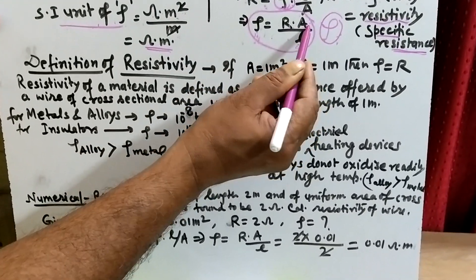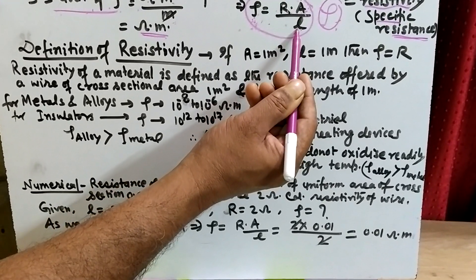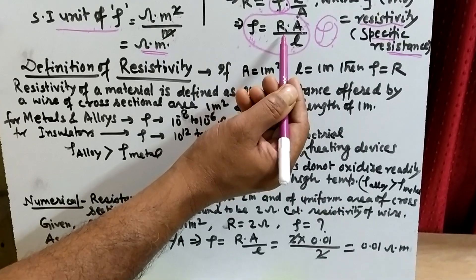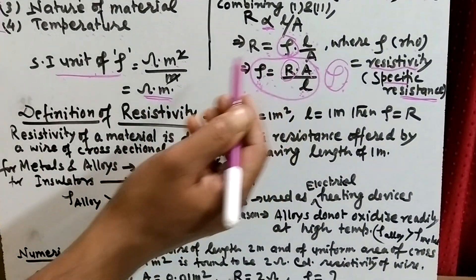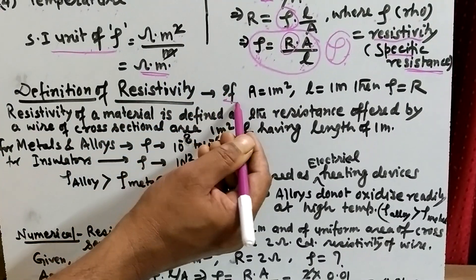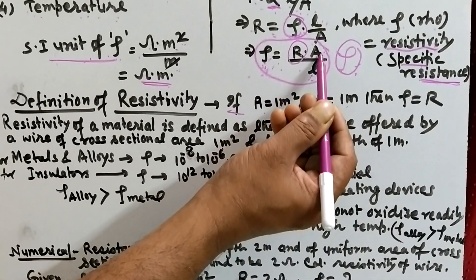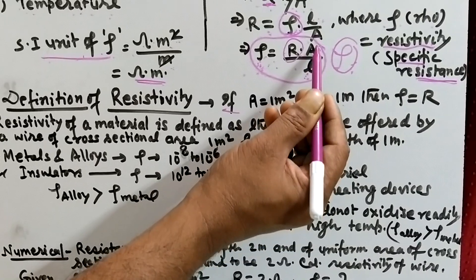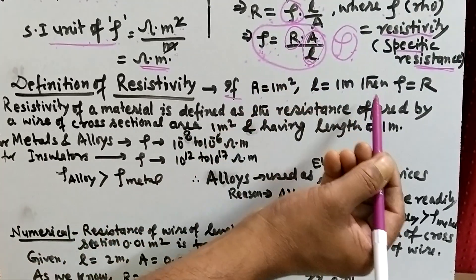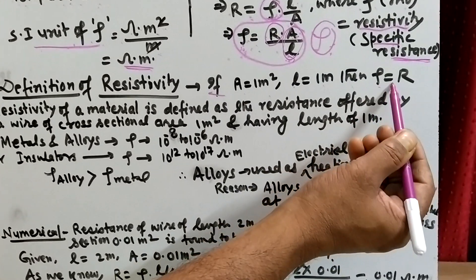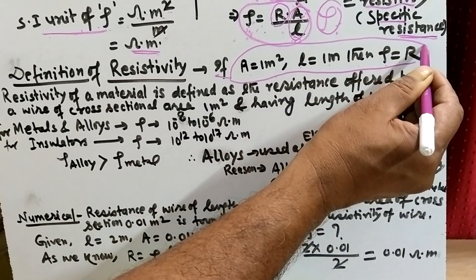We can take the area of cross section A equals 1 meter square and the length of the wire as 1 meter. Then resistivity equals resistance. Suppose A equals 1 meter square and L equals 1 meter. Put these values into the formula: A equals 1 meter square and L equals 1 meter. The denominator and numerator become 1, so rho equals R.